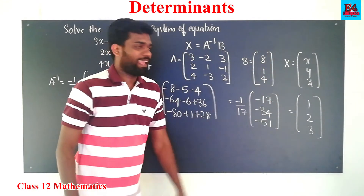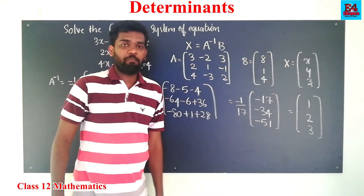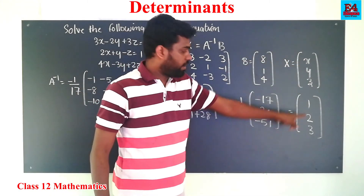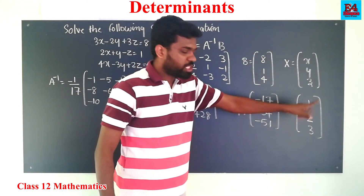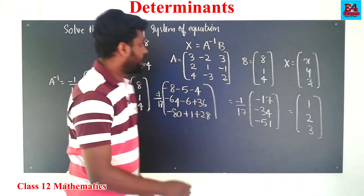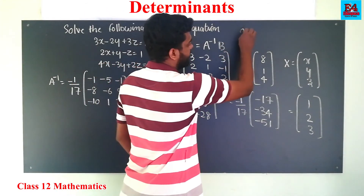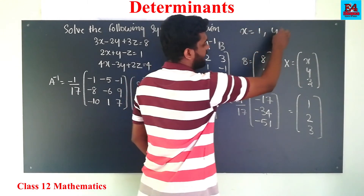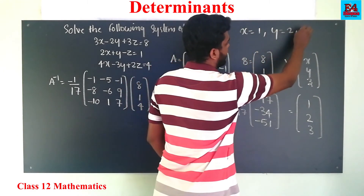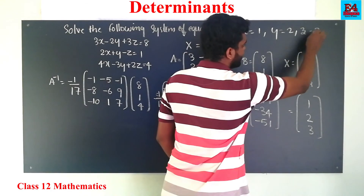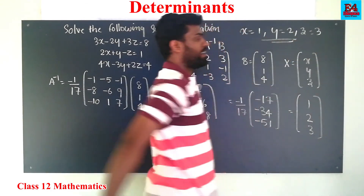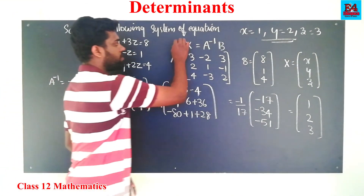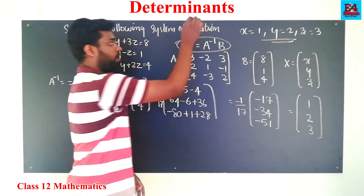Now we compare the two matrices. x, y, z is our variable matrix and the answer matrix is 1, 2, 3. So we have to answer it: x equals 1, y equals 2, z equals 3. We can verify that x equals A inverse into B.